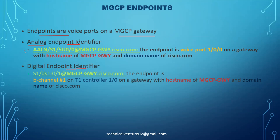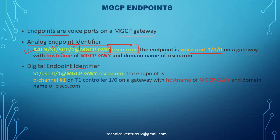The analog identifier format is: 'aaln/s1/su0/0@mgcp-iphone-gateway.cisco.com' — where 's1' is slot one, 'su0' is subunit zero, and '0' is the port number. The endpoint corresponds to voice port 1/0/0 on a gateway with hostname 'mgcp-gateway' and domain 'cisco.com'. The slot contains subunits — for example slot 1 with subunits 0, 1, 2, 3 — and under each subunit you have individual interface ports.